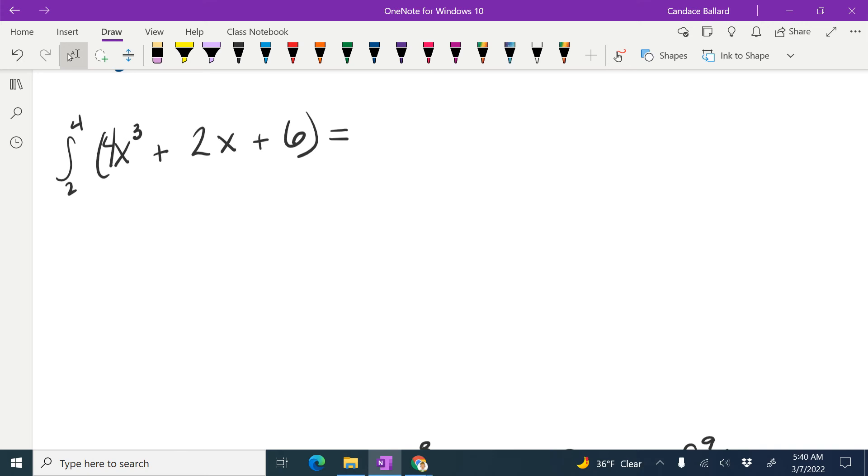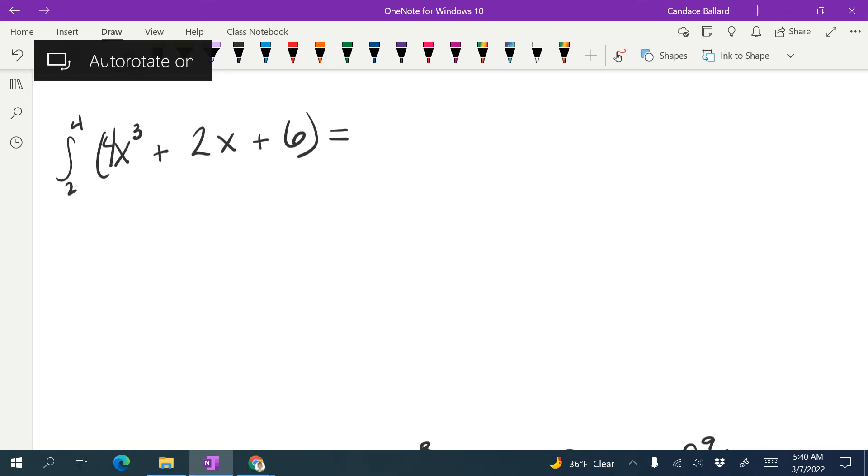In this video, we're going to integrate this definite integral, which goes from 2 to 4 of 4x cubed plus 2x plus 6. Oops, there's missing a dx at the end there.